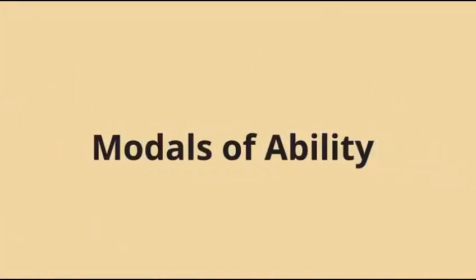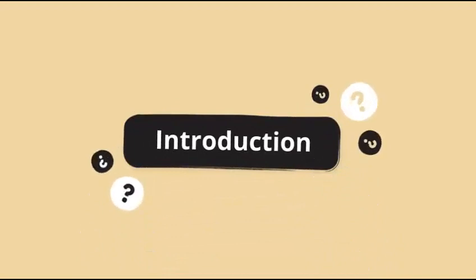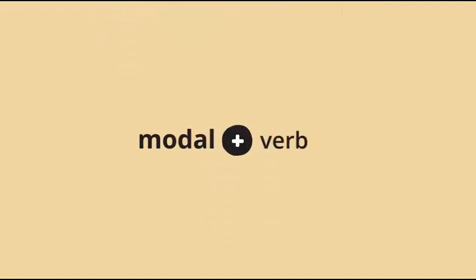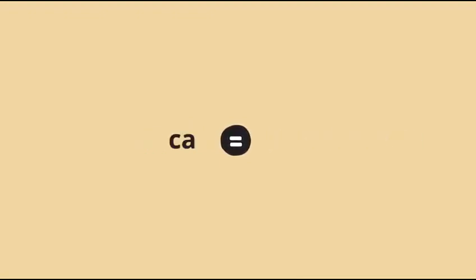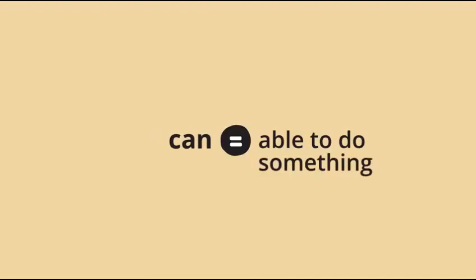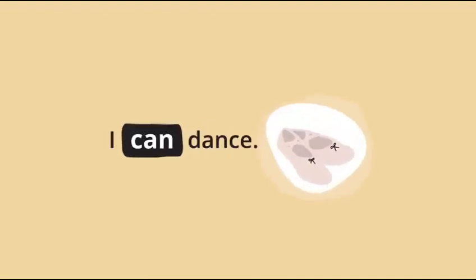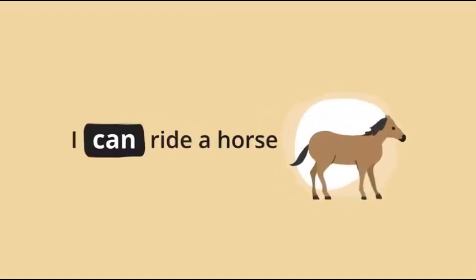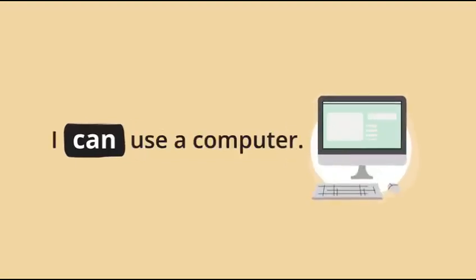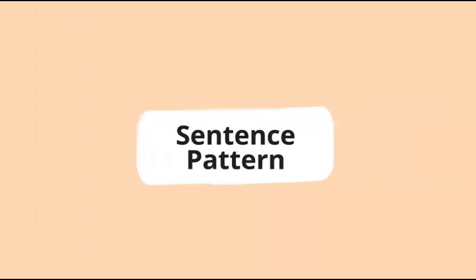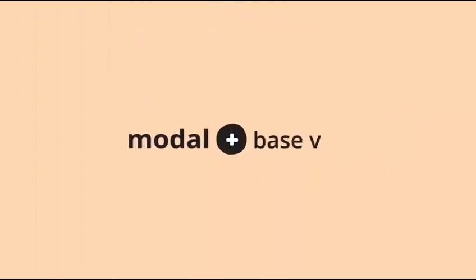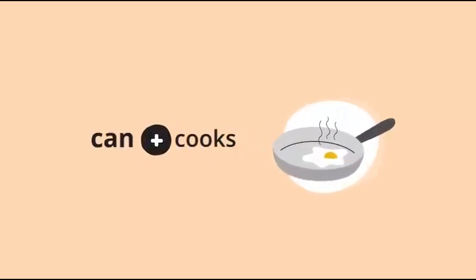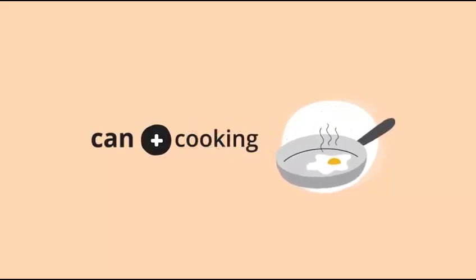Modals of ability. What is a modal? A modal is a word that comes before the main verb. A modal gives a verb extra meaning. The modal 'can' is a modal of ability. 'Can' means you are able to do something. For example: I can dance. I can ride a horse. I can use a computer. Modals are always followed by a base verb. A base verb is a verb with no ending added to it — no S, ED, or ING ending.